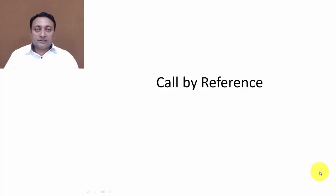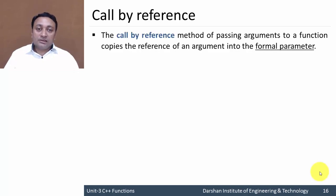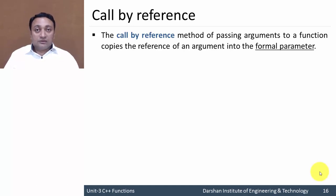Hello everyone. In this session we are going to discuss call by reference. Call by reference is one of the categories of function, or it is a method of passing arguments to a function that copies the reference of an argument into the formal parameter. Now let us check what a formal parameter is.